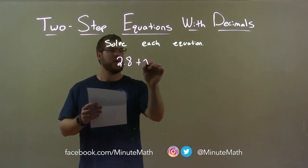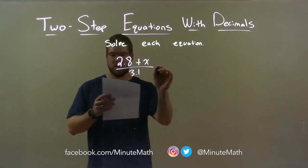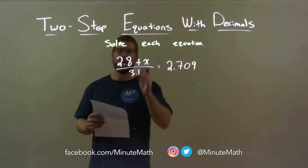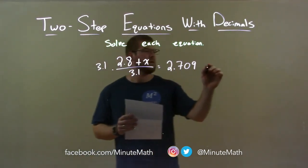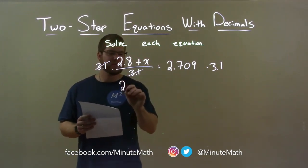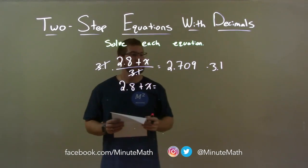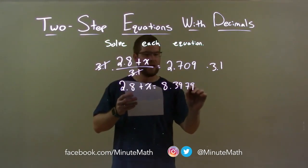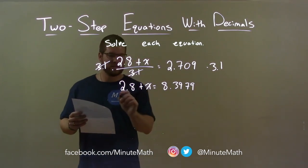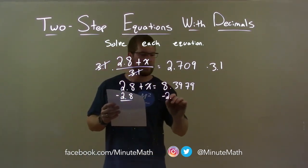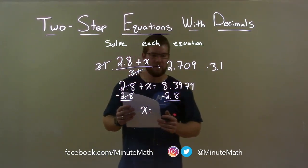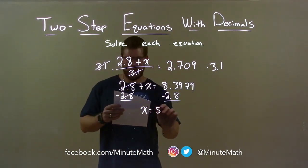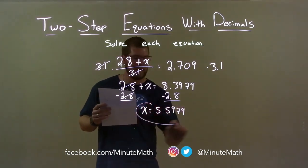2.8 plus x over 3.1 equals 2.709. I'm dividing by 3.1, so my first step in getting x by itself is multiplying 3.1 to both sides. It eliminates the 3.1s on the left, giving me 2.8 plus x by itself on the left. On the right, 2.709 times 3.1 is 8.3979. Now I'm adding 2.8, so opposite of addition is subtraction. If I subtract 2.8 from both sides, the 2.8s cancel, giving me x by itself. On the right, 8.3979 minus 2.8 is 5.5979. And there we have our final answer.